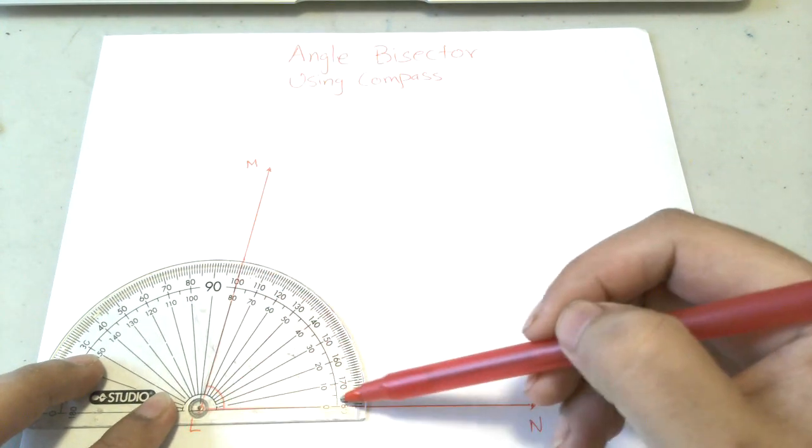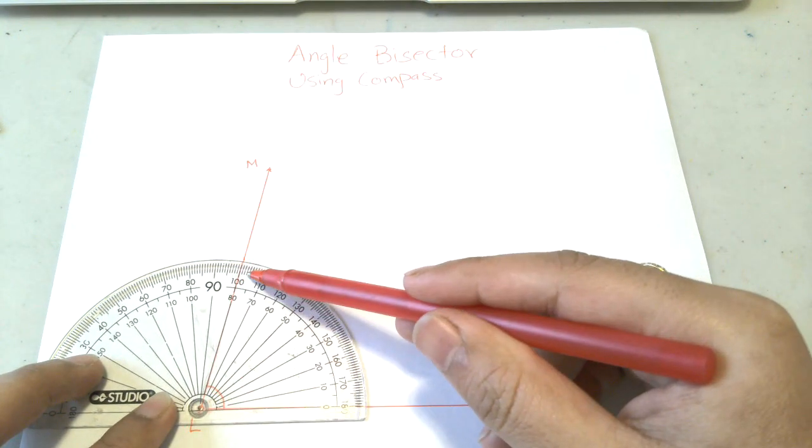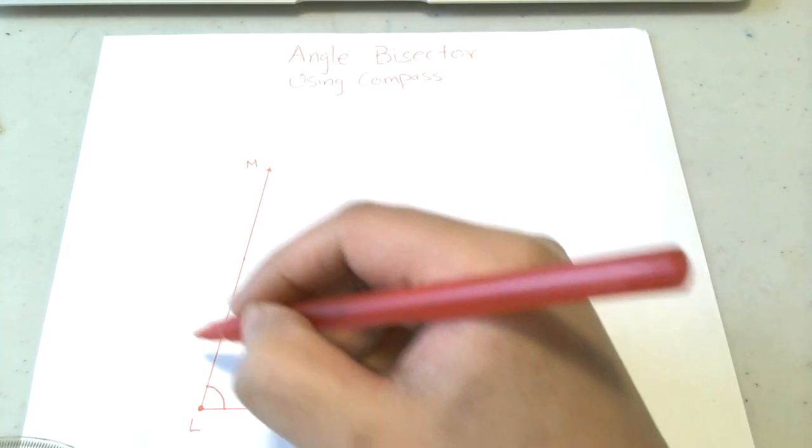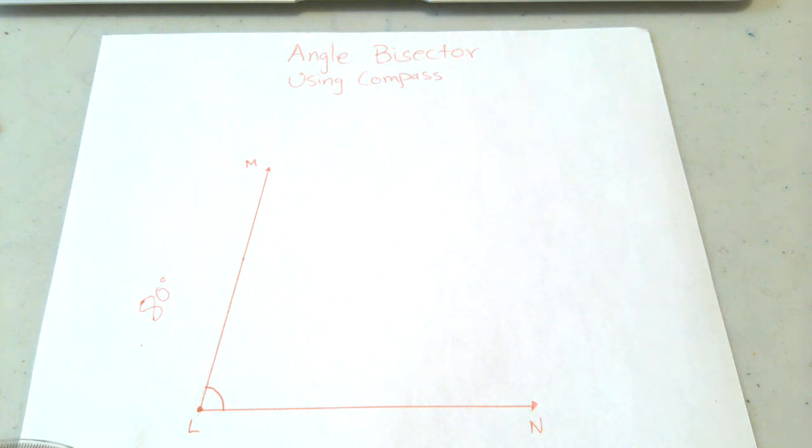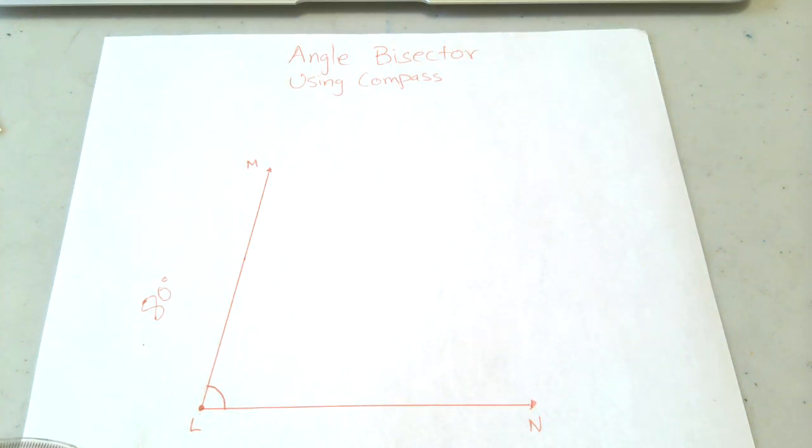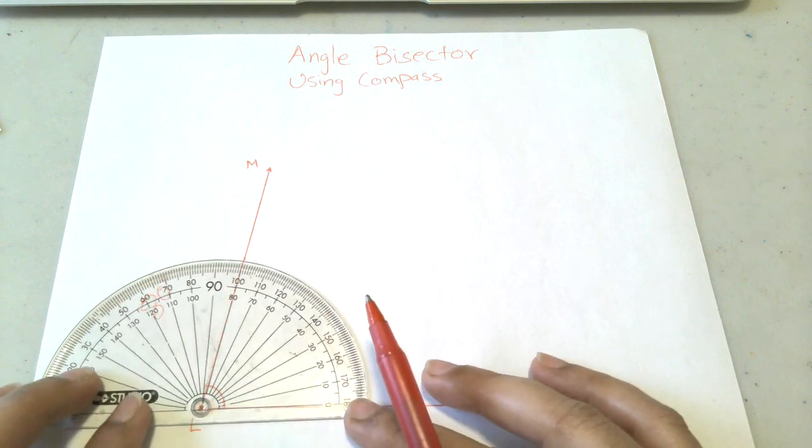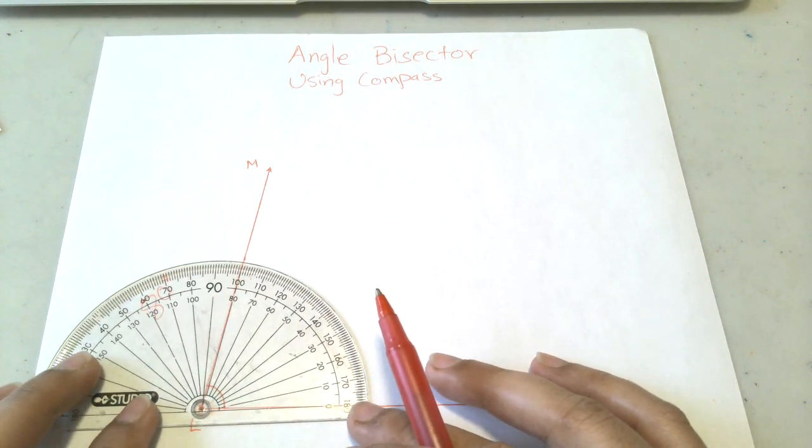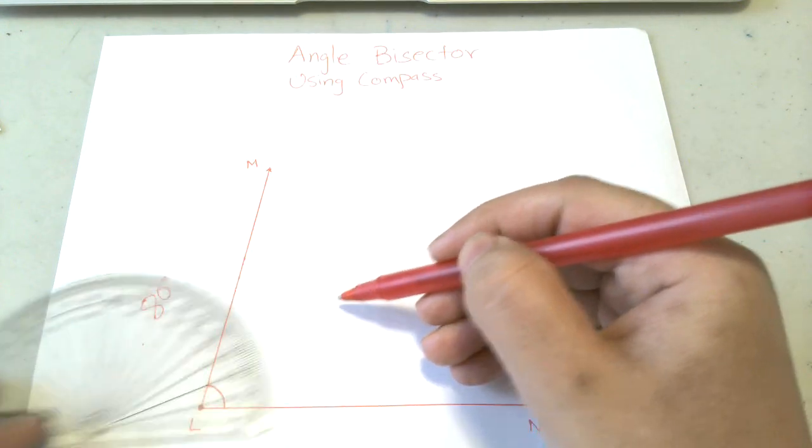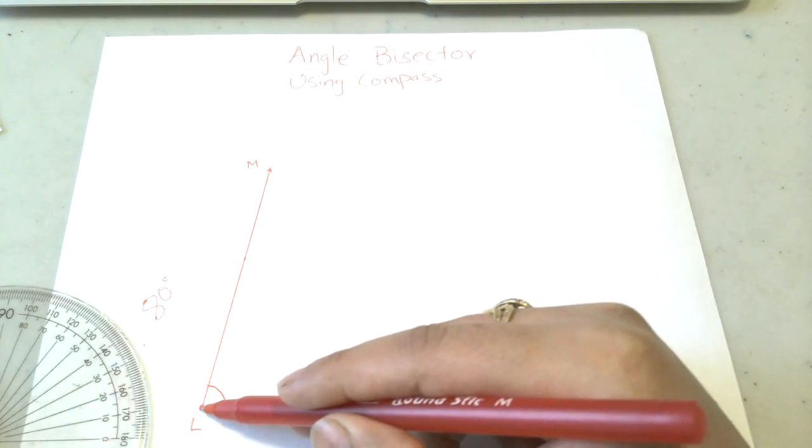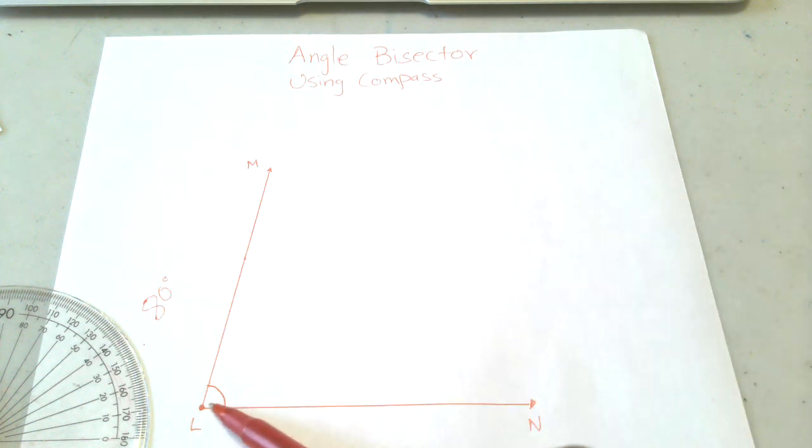So this angle is 80 degrees, so I'll write it down. One way is to find half of 80. We all know the half of 80 is 40 degrees. So using your protractor, you can find the 40 degree angle over here and connect it. Make sure when you're bisecting it, the line passes through the dot.